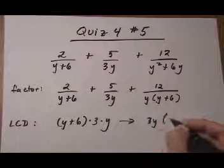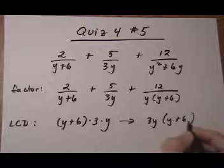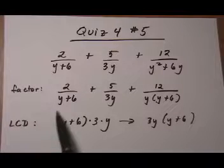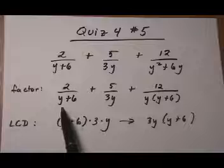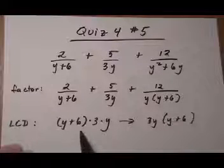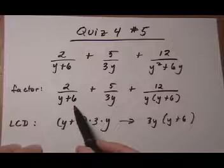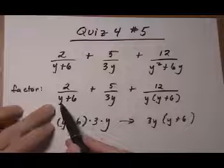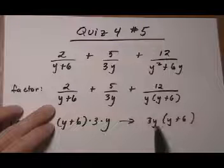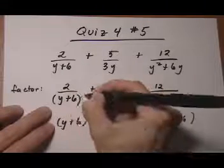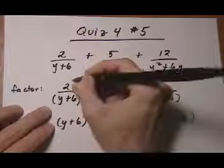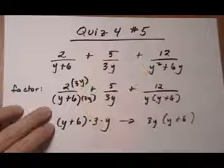So rewriting the LCD, we get 3y times y plus 6. Now what we need to do is rewrite each fraction so that it has the common denominator as its denominator. So we need to look at each fraction and see what's missing in the denominator. y plus 6, well we need to multiply by 3y if we want to turn that into the LCD. So let's multiply by 3y, and that's okay to do as long as we do the same to the top.